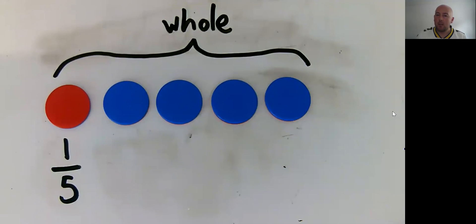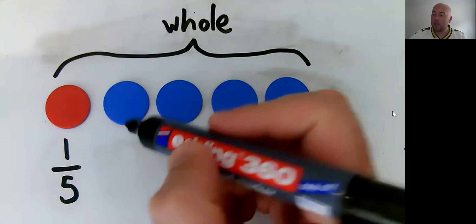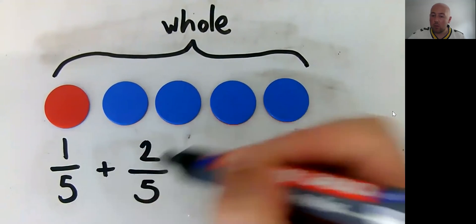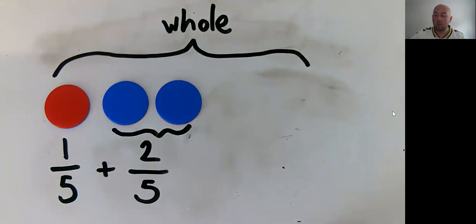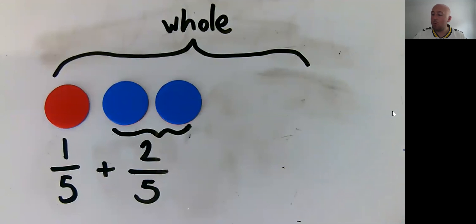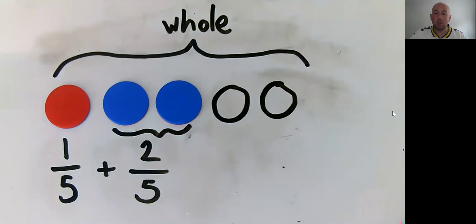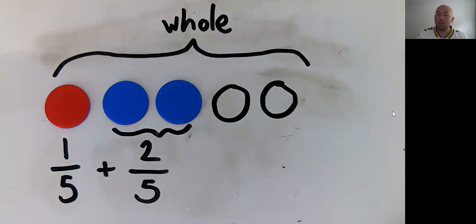So we might decide that we want to explore the addition of fractions. Within this context of the whole, that's really easy to do. Here's one of five parts, and say we were adding another two of five parts — so here you've got two of five parts. The understanding is that the whole is still defined as having five parts. A five frame is really useful in this situation. We've got one of five parts added to two of five parts, and you can see very easily that we've got three of five parts. As long as we're thinking in the context of the whole, we can make this really clear.